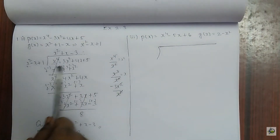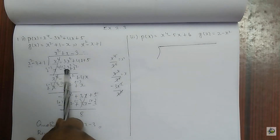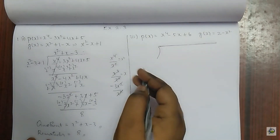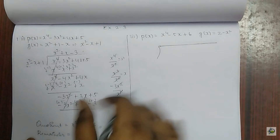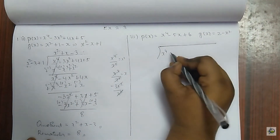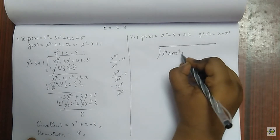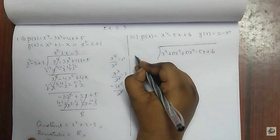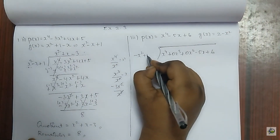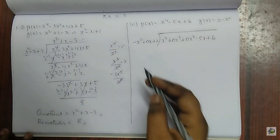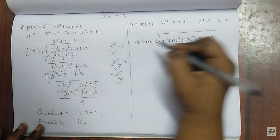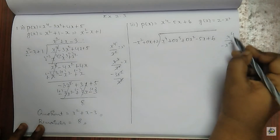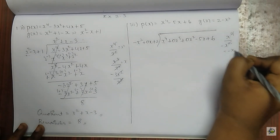I didn't arrange this one, so we may get confused in between. When you don't have an x cube term or x square term, you can add it as 0 x cube and 0 x square. So here: x power 4 plus 0 x cube plus 0 x square minus 5x plus 6. I have to arrange the divisor as minus x square plus 0x plus 2. Similarly, we divide the first term by the first term: x power 4 by x square, the squares get cancelled and we get minus x square.